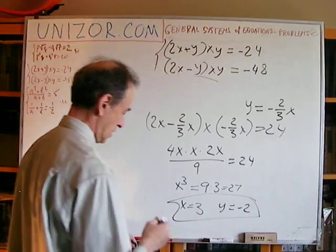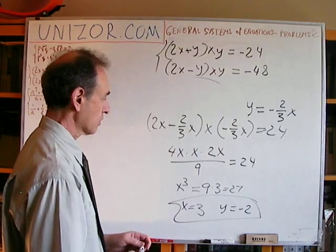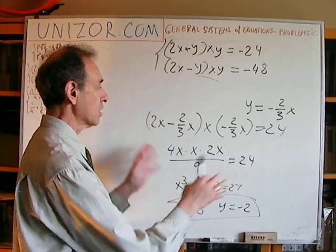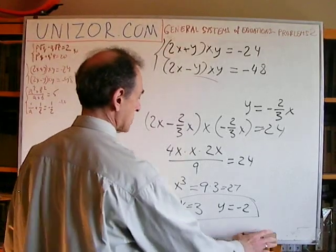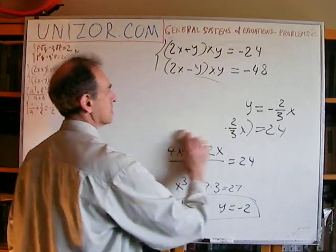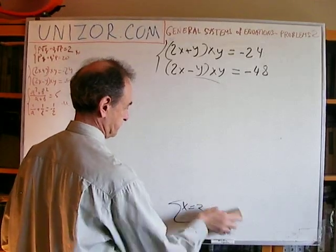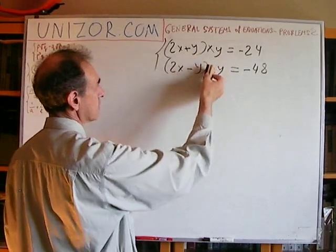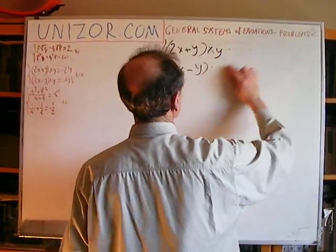I didn't do the checking in this problem, but you have to understand that whenever you do all kinds of manipulation with complicated systems, you always have to do the checking. What was interesting here: you notice XY in both equations, divide them, and that makes a much simpler relationship.